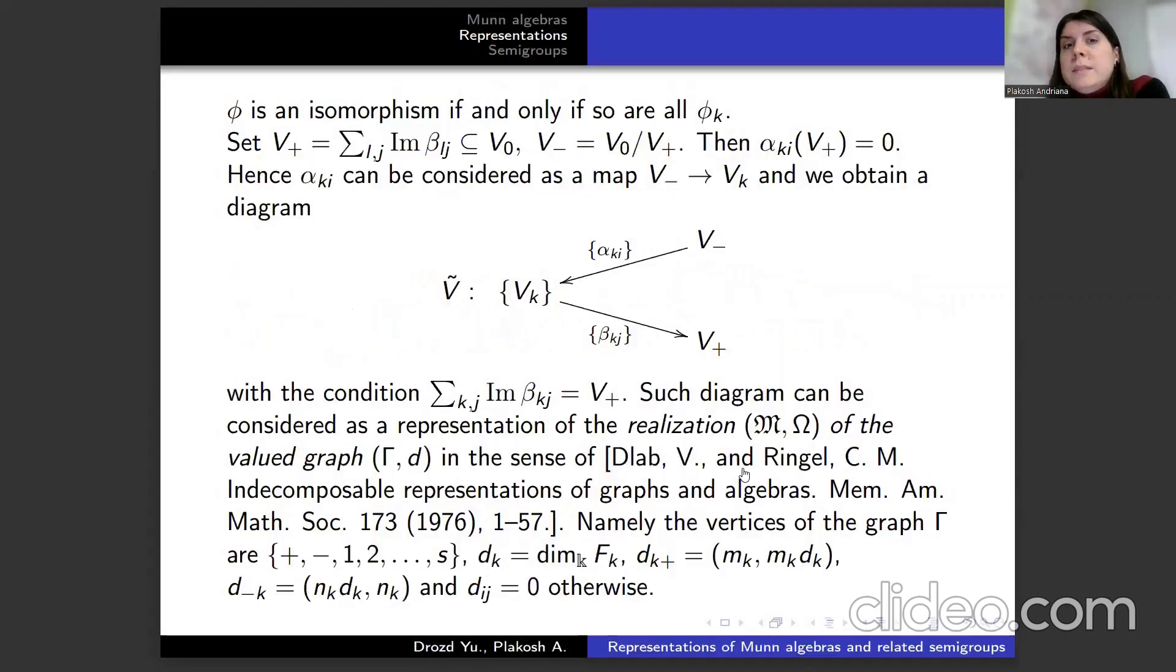φ is an isomorphism if and only if so are all φₖ. We have Vₖ⁺ and then αₖᵢ from Vₖ⁺ equals 0.